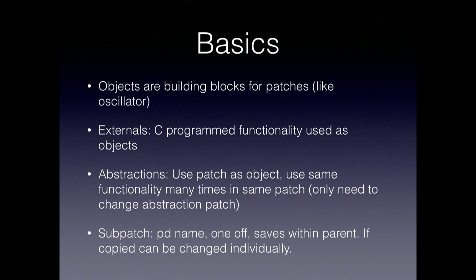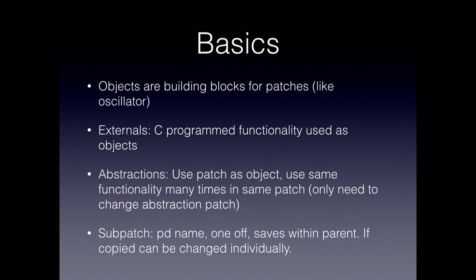Then there are abstractions, which is a complete patch saved and loaded back as an object. That's the way to hide complexity so patches don't look like rat's nests. Then there's something called a sub-patch, which is almost the same as an abstraction, except it is saved with the current patch. So if you copy it and change values individually, unlike abstractions where if you change one value, everything changes with it.